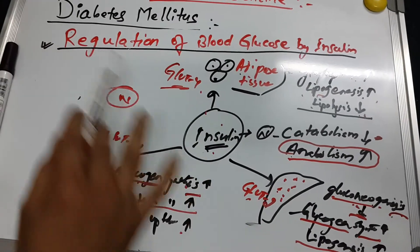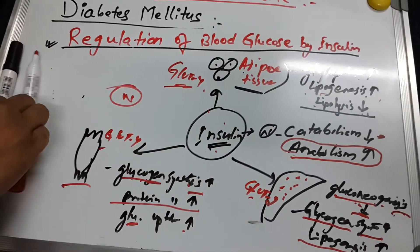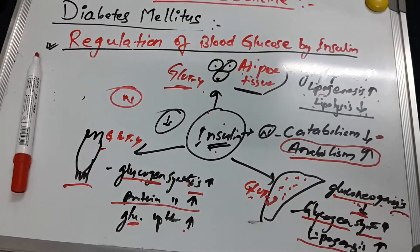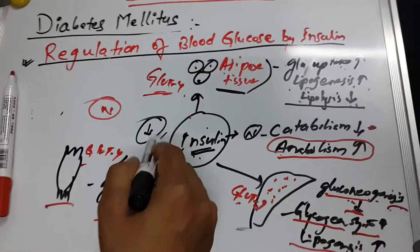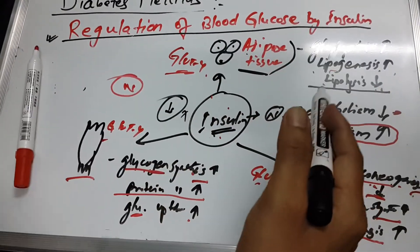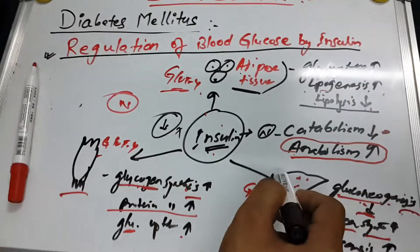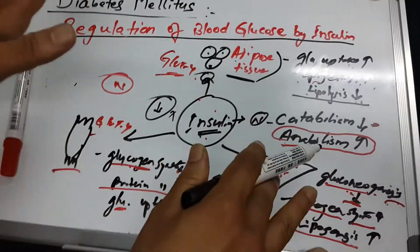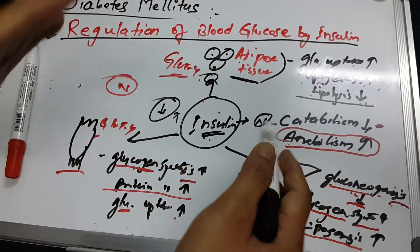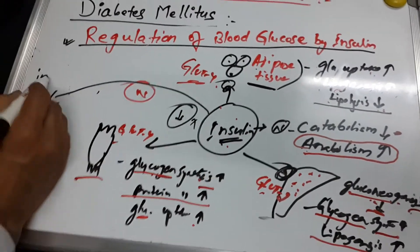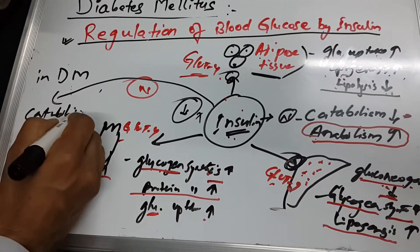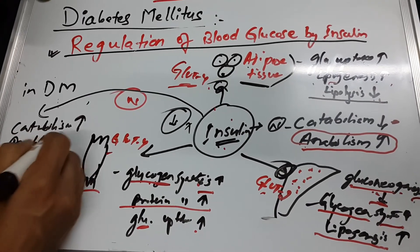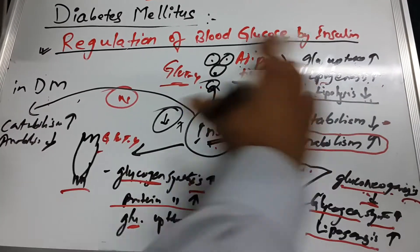But what if insulin decreases? In diabetes mellitus, insulin may be completely absent due to destruction of beta cells, or insulin may be present but the receptors lack sensitivity and cannot respond. In either case, the opposite effects occur — in diabetes mellitus, catabolism increases and anabolism decreases.